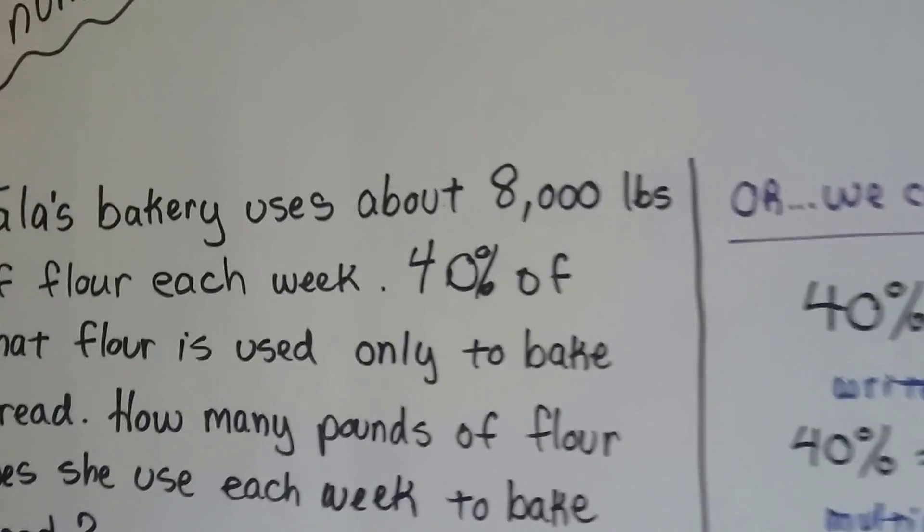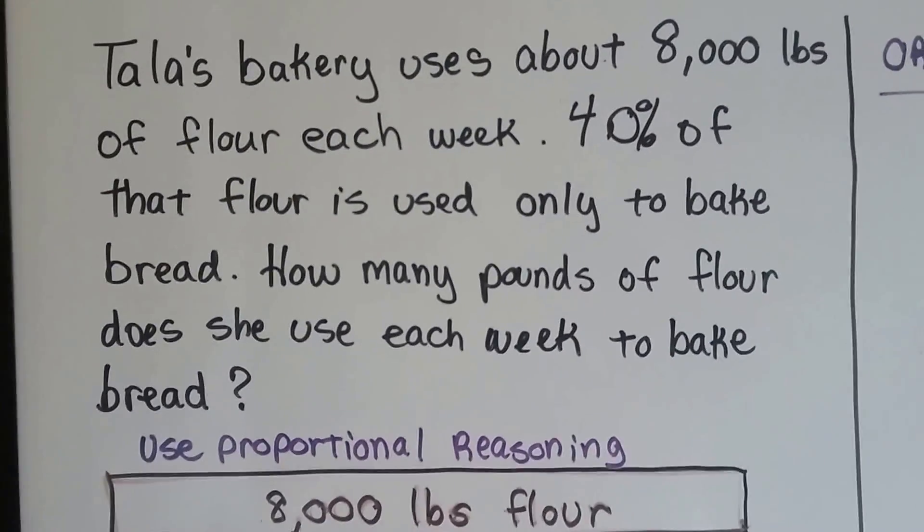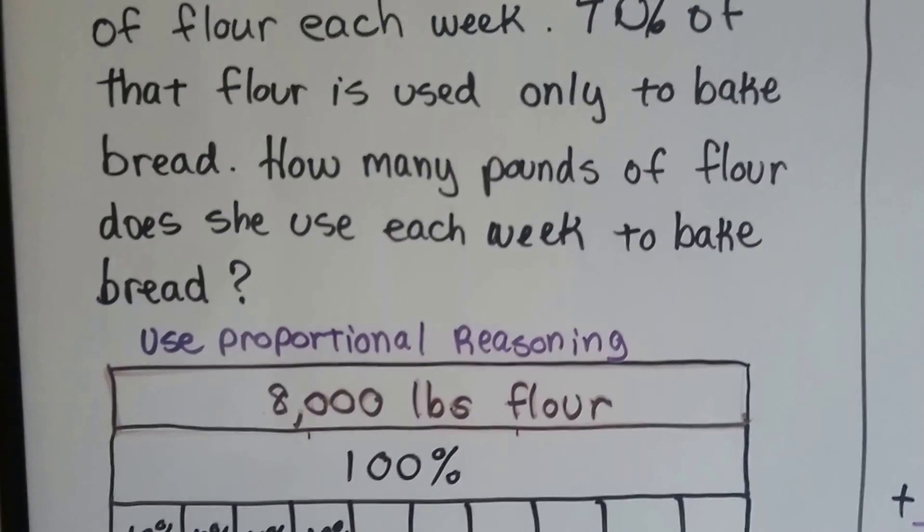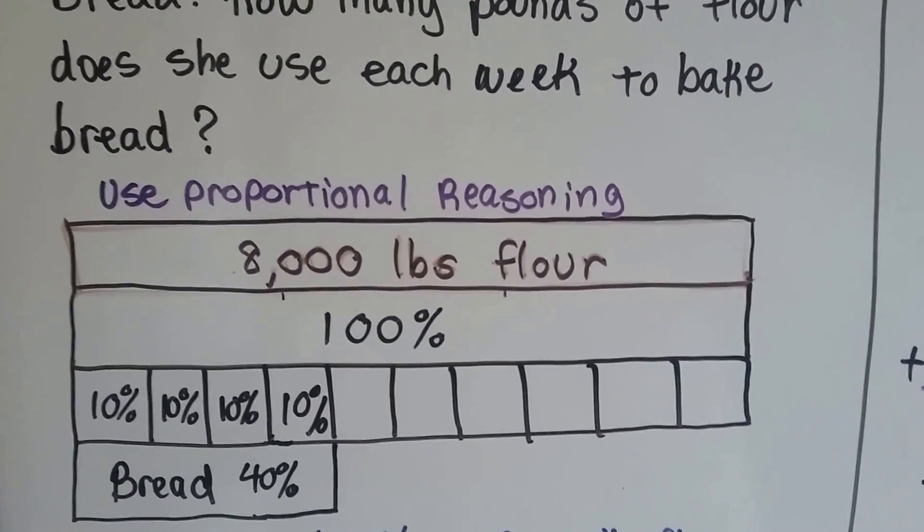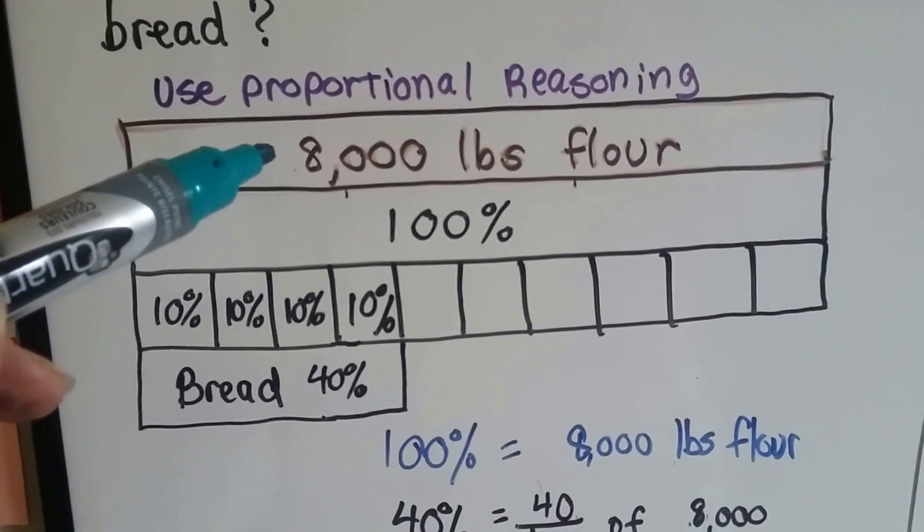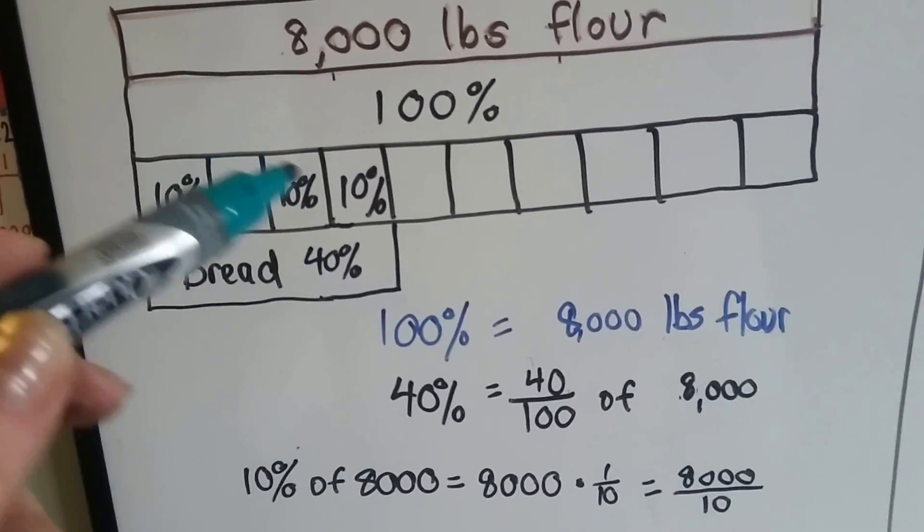Tala's bakery uses about 8,000 pounds of flour each week. Forty percent of that flour is used only to bake bread. The rest she uses for other stuff, muffins and cakes and stuff. So how many pounds of flour does she use each week to bake bread? I'm going to use proportional reasoning. There's 8,000 pounds of flour. That's going to be our 100%.